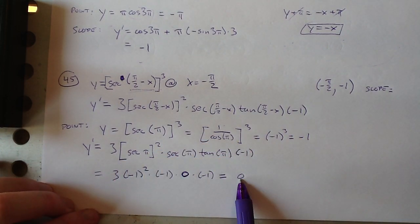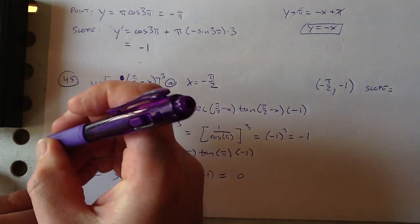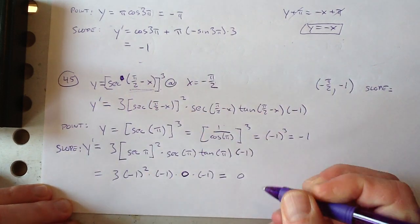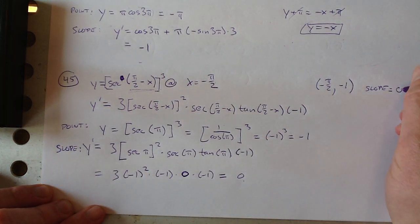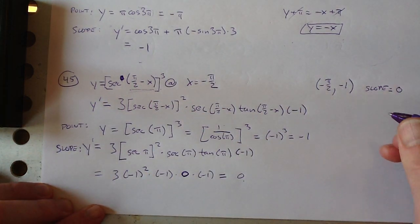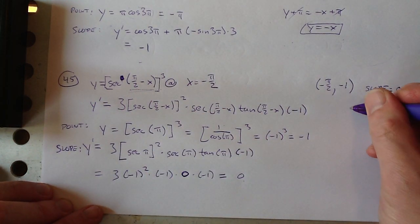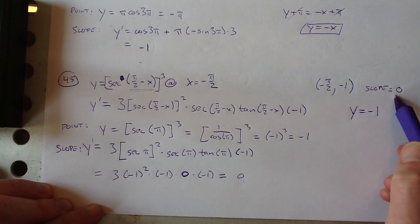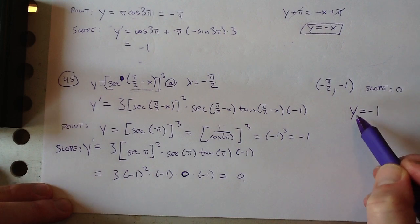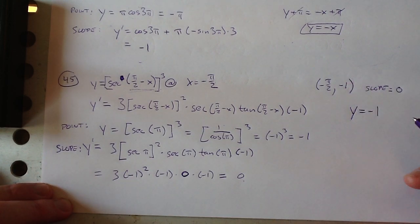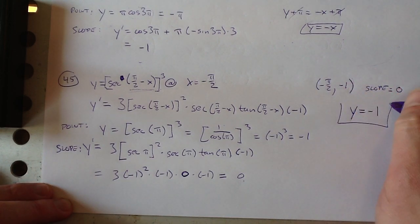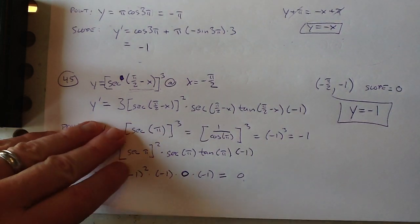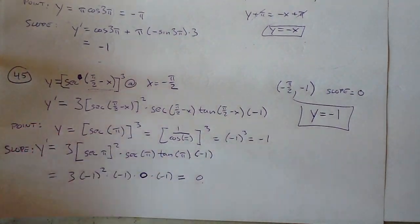For the point, plug x equals negative pi over 2 into the original: y equals secant of pi over 2 minus negative pi over 2, cubed, which is secant cubed of pi. Secant of pi equals 1 over cosine of pi equals 1 over negative 1 equals negative 1, and negative 1 cubed is negative 1. So the equation for the horizontal tangent line is y equals negative 1.